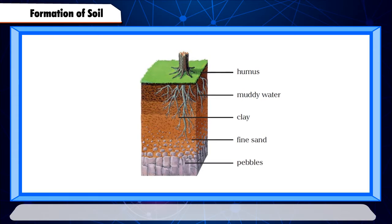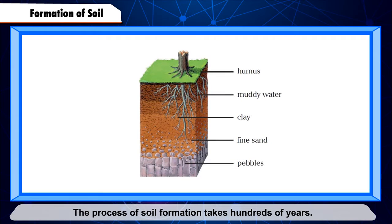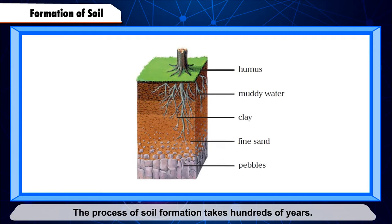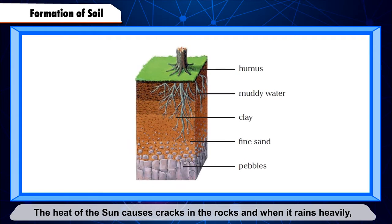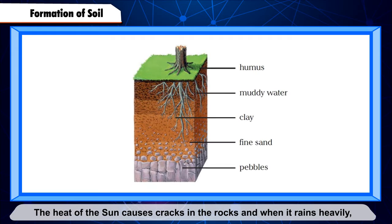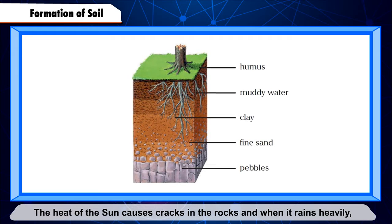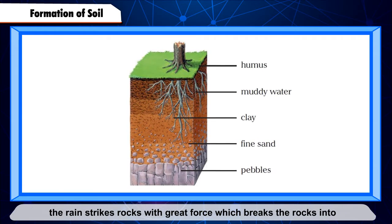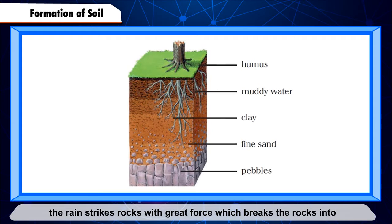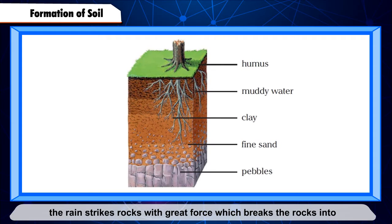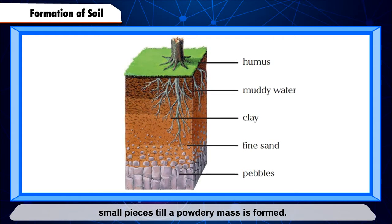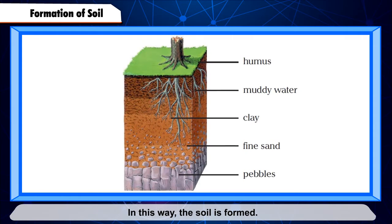Formation of Soil: the process of soil formation takes hundreds of years. The heat of the sun causes cracks in the rocks, and when it rains heavily, the rain strikes rocks with great force, which breaks the rocks into small pieces till a powdery mass is formed. In this way, soil is formed.